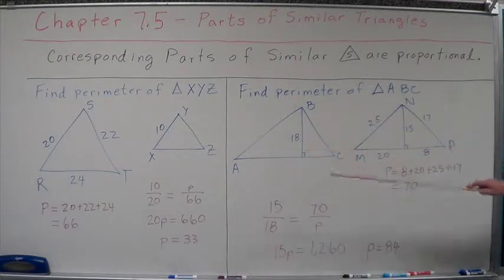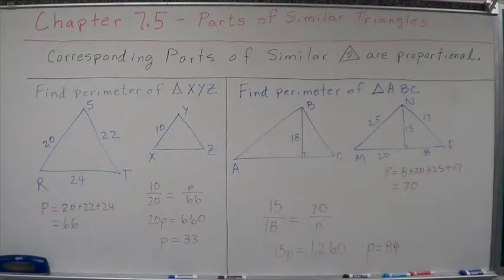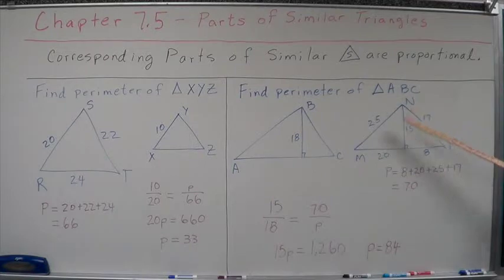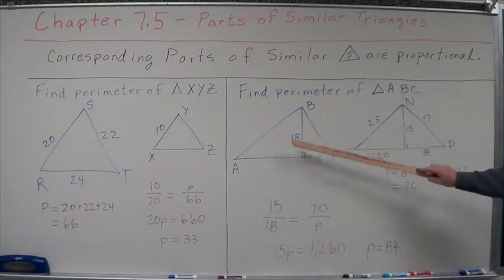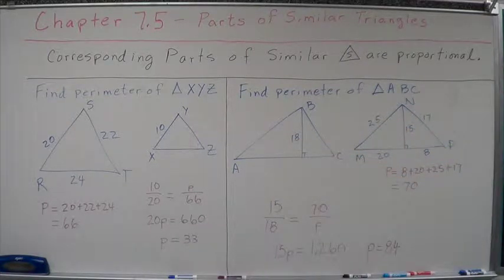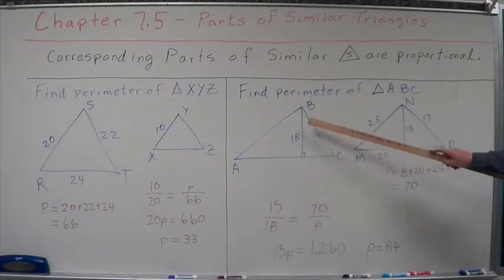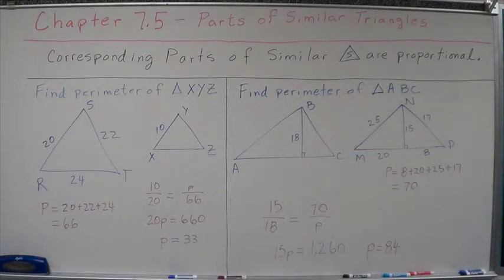Now let's look at an altitude where we've got corresponding altitudes of similar triangles to set up the proportions. Find the perimeter of triangle ABC. We're given that these are similar triangles. One of the corresponding pieces that we have of each one, we have an altitude here that is 18, we have an altitude here that is 15.